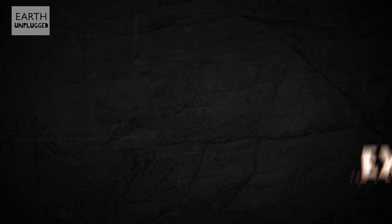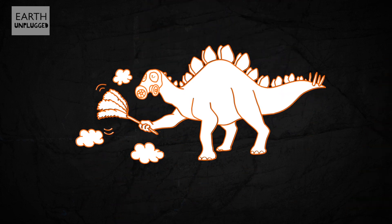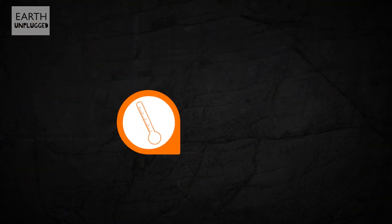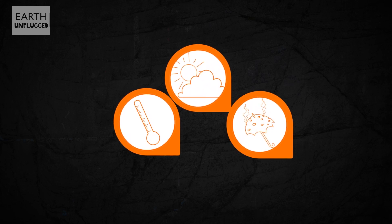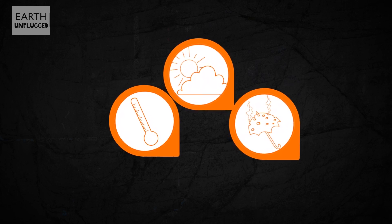Both would have filled the atmosphere with dust and poisonous gas. Lower temperatures, lack of sunlight and acid rain would have caused plants to die and dinosaurs to starve.